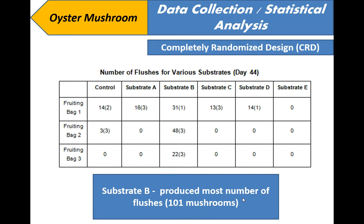Substrate B produced the most number of flushes, which is 101. Flushes refer to the harvesting period where mushrooms are picked from the fruiting bodies with an irritating motion, so more flushes means good quality of oyster mushroom.